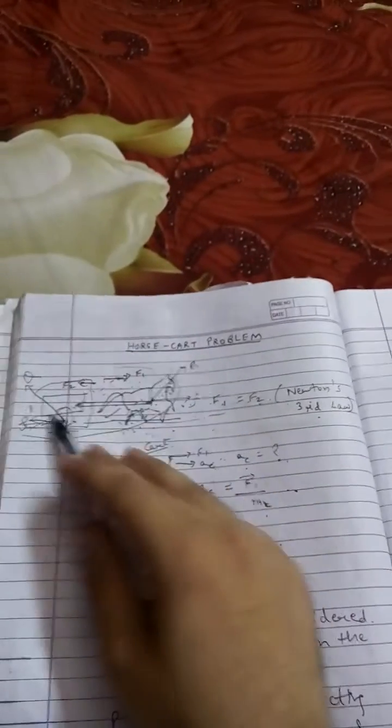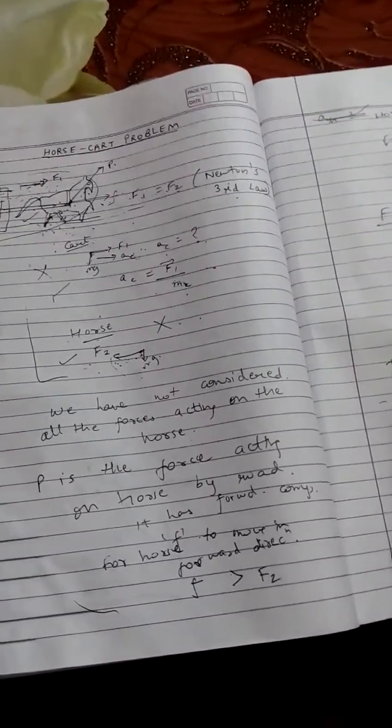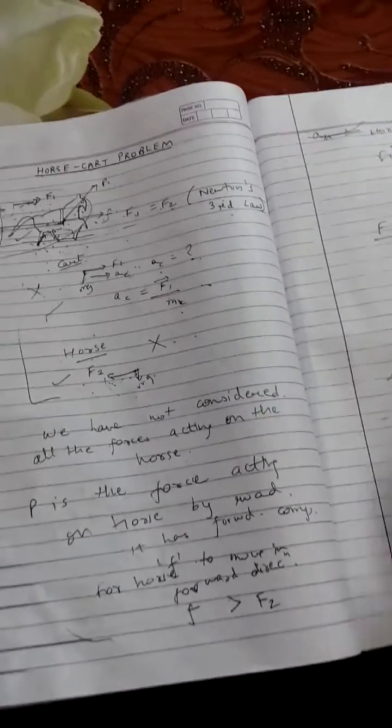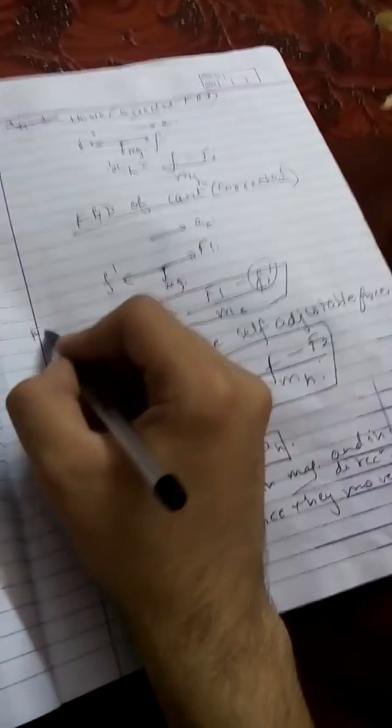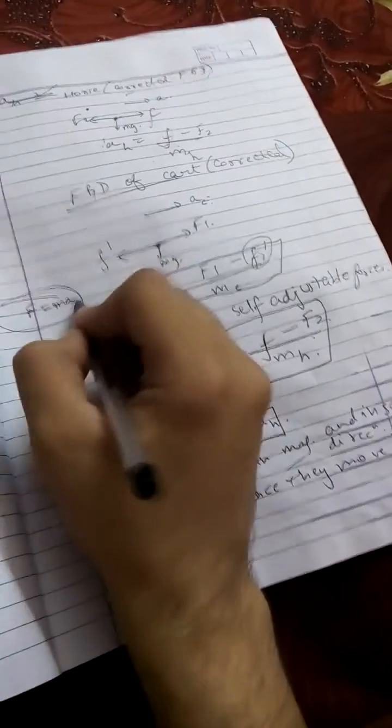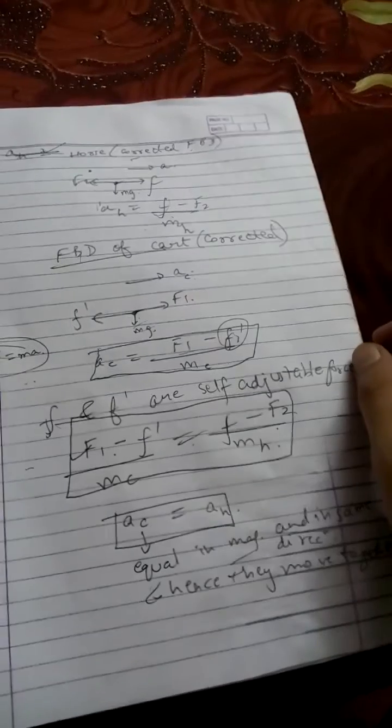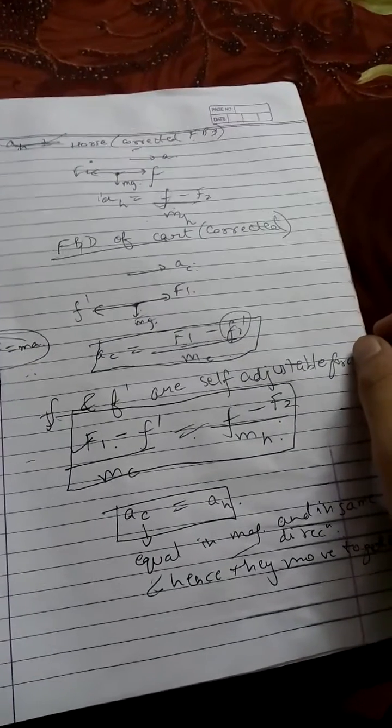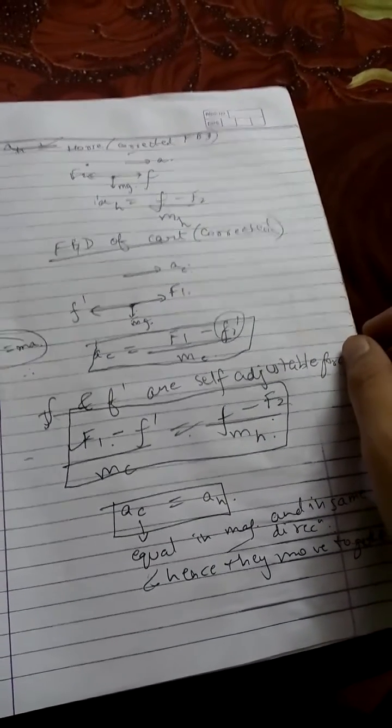So once again I must remind you: only the forces on the system — remember the word system — are to be considered to discuss the motion of the system, and all the forces acting on the system are to be considered. Only then can you apply the formula F equals MA. I hope you liked the video — this is my first video, please like, subscribe and share.